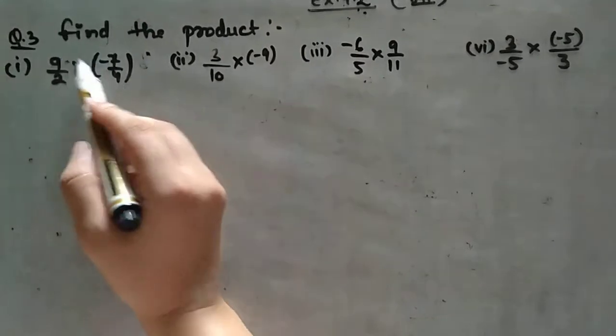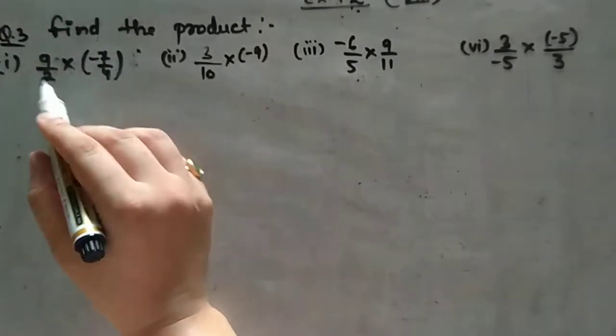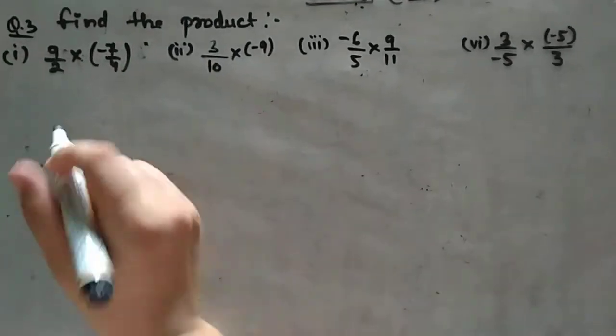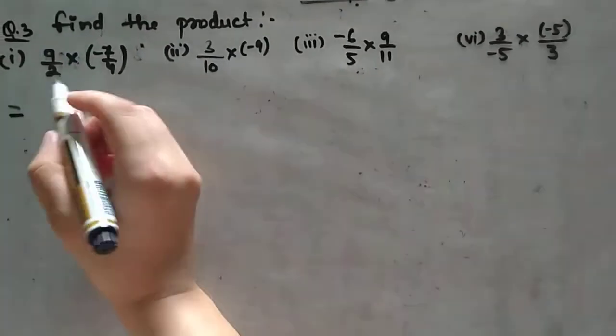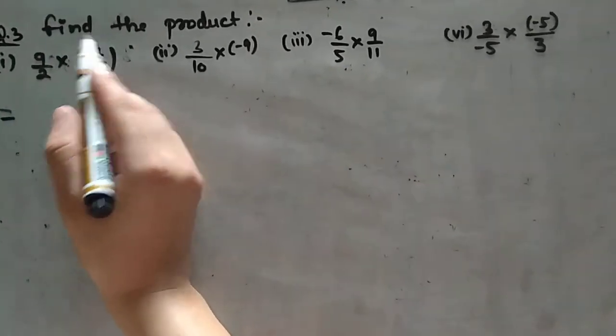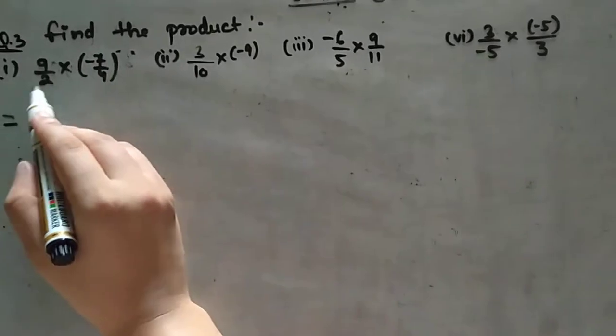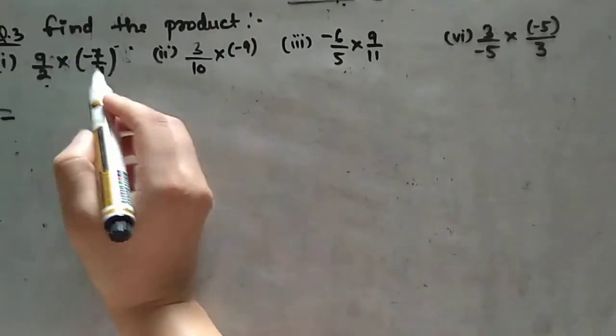If any numerator or denominator can be canceled, we can cancel directly. Otherwise, we multiply numerator with numerator and denominator with denominator. After multiplying, we can simplify by canceling or dividing numerator with denominator.